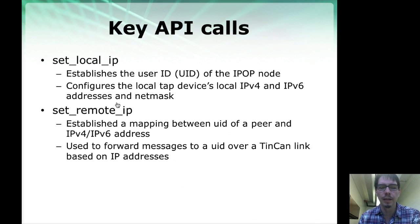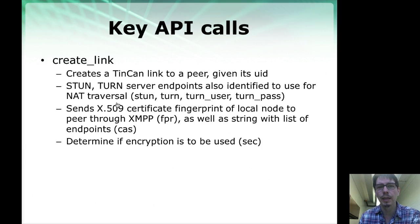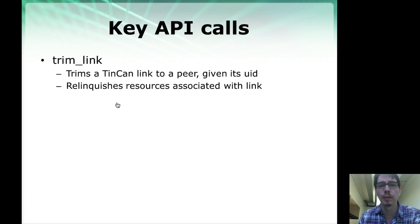SetRemoteIP establishes the mapping between the user ID of the IPOP node and IPv4 or IPv6 addresses. CreateLink is where the controller asks Tincan to create a link to a peer given its ID — this provides the servers to use, the fingerprint of an X.509 certificate, the list of endpoints to be used by this node, and whether encryption is to be used. TrimLink does the opposite: given an existing link, it terminates the link and relinquishes all associated resources. Links maintain connection information and keep-alive messages so NAT mappings don't expire, so they use resources, and if a link is not being used productively, it's a good idea to trim it.